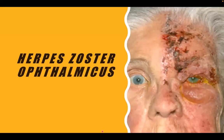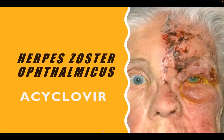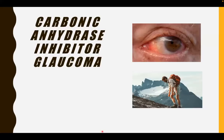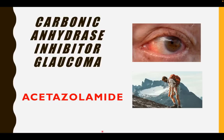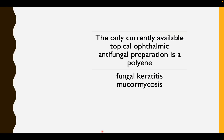What about herpes zoster ophthalmicus? The drug of choice is acyclovir. All herpes virus infections are treated with acyclovir except CMV or cytomegalovirus, because the drug of choice for CMV is ganciclovir. What is the only currently available topical ophthalmic antifungal preparation used for the treatment of fungal keratitis and mucormycosis? This is the ophthalmic drug natamycin.